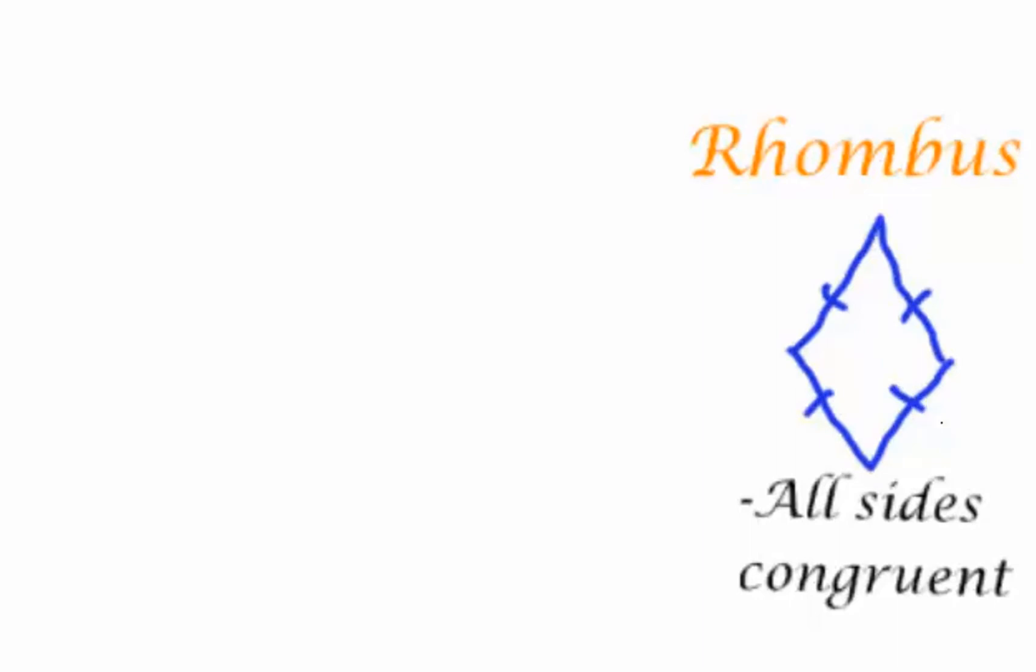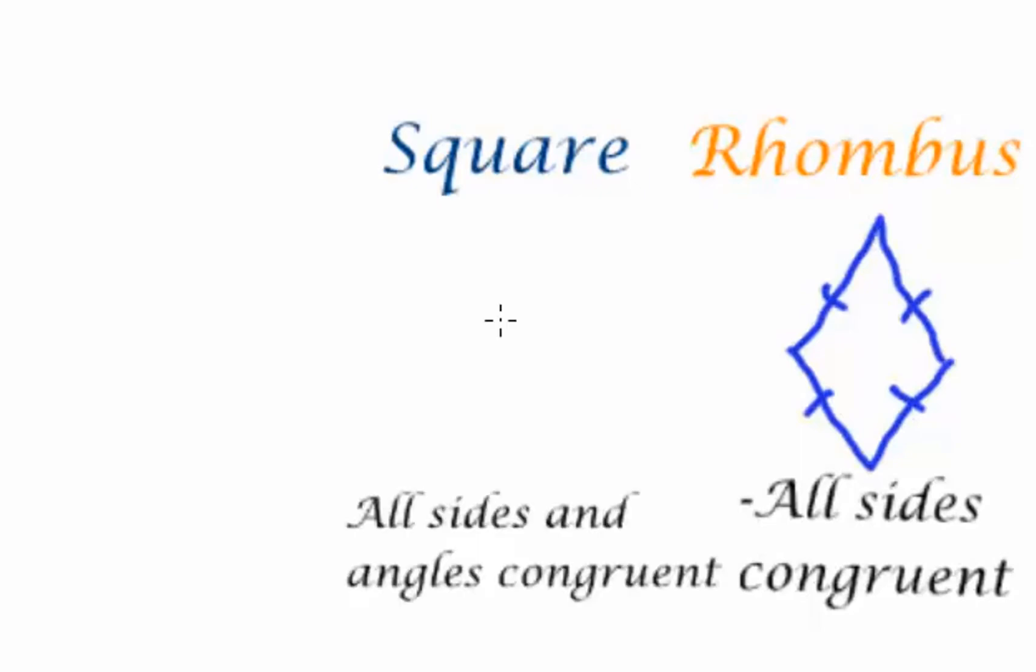From a rhombus we can talk about a square, and with a square all sides and all angles are congruent. Whatever that might be for the sides, they're all exactly the same, and all the angles are the same at 90 degrees. So everything gets the box, every side gets a dash.